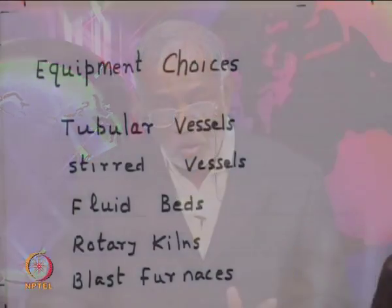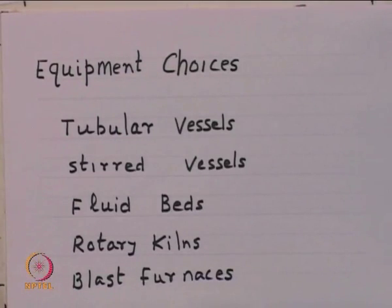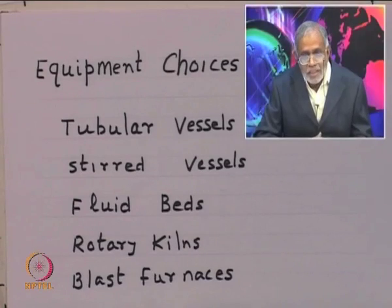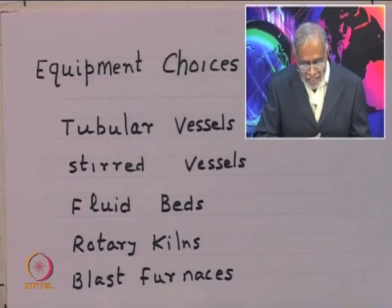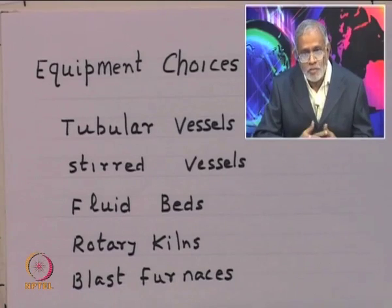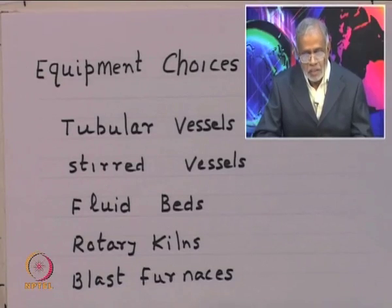The base point is that science is only about models of reality, and to the extent the model describes reality we will use them; when they do not describe reality well, we look for better models. This is the philosophy with which we will look at this course. Chemical industry has been around for more than 200 years. The kinds of equipment we see in the chemical industry include tubular vessels, tubular reactors common in the petroleum industry, and stirred vessels very common in the organic chemical industry.